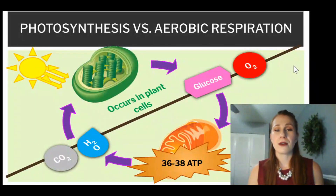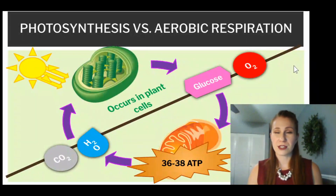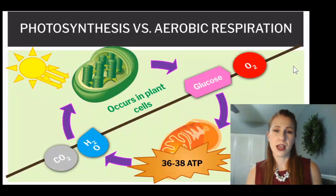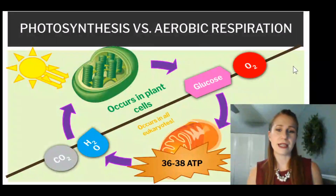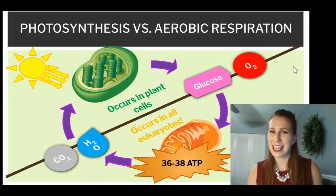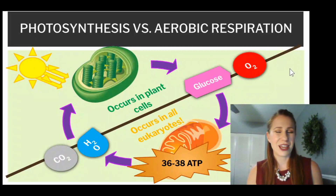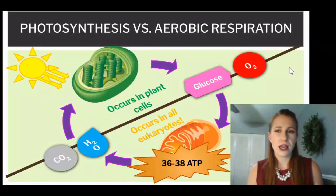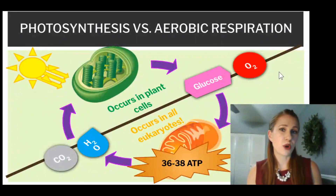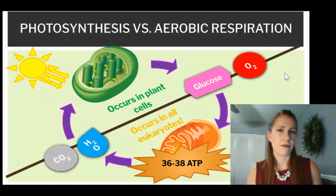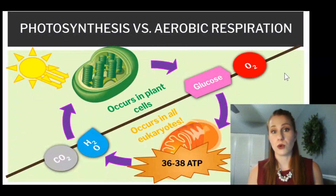Photosynthesis occurs only in plant cells, while aerobic respiration happens in plant and animal cells — and really all eukaryotes. So fungi are included in this, as well as protists, which are another kingdom of eukaryotes.